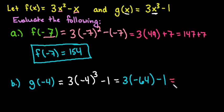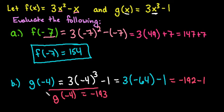If we simplify, 3 times negative 64 gives us negative 192 minus 1, so we can say that g of negative 4 is equal to negative 193. So when I replace my x variable in this equation with negative 4, my output is negative 193.